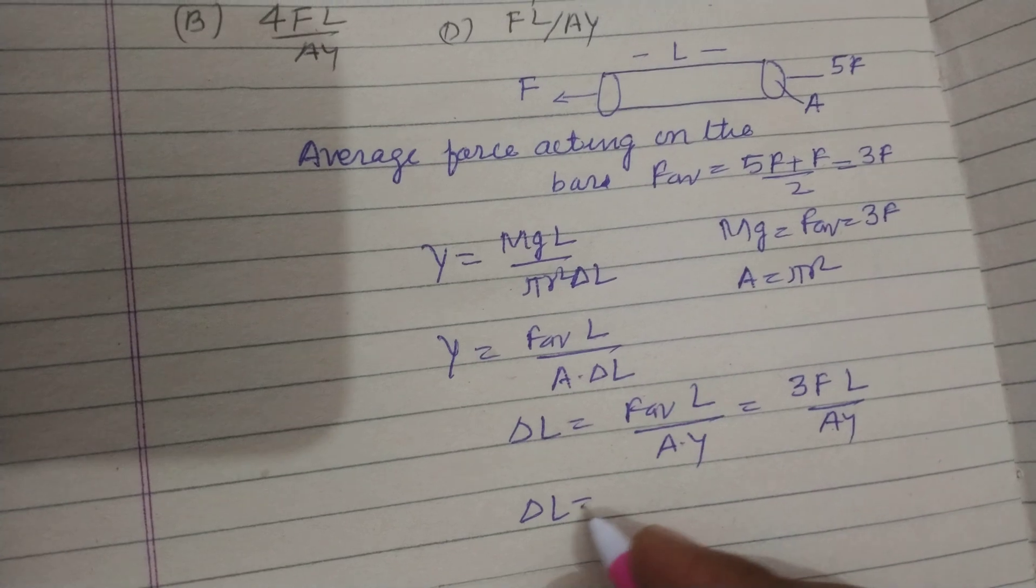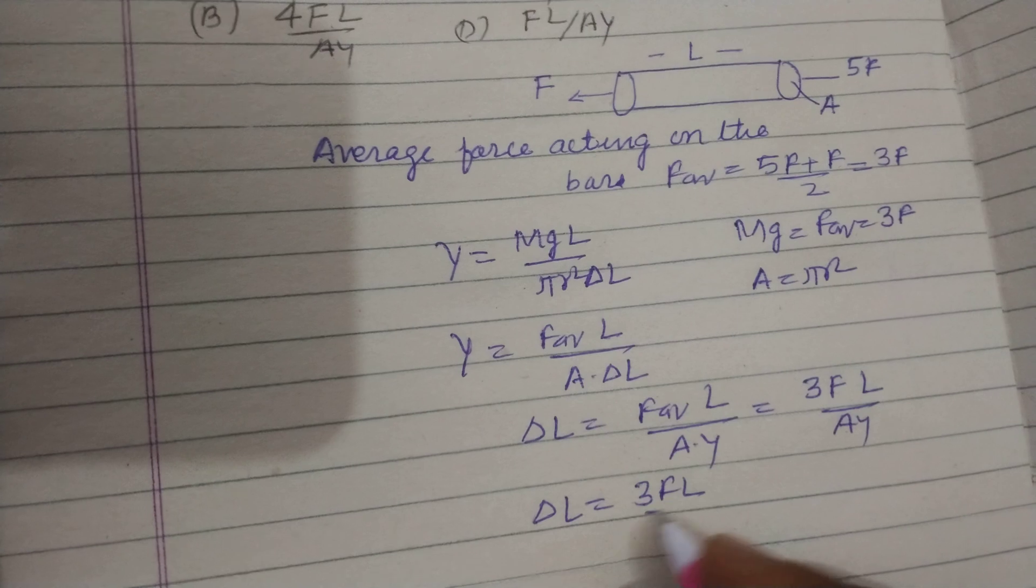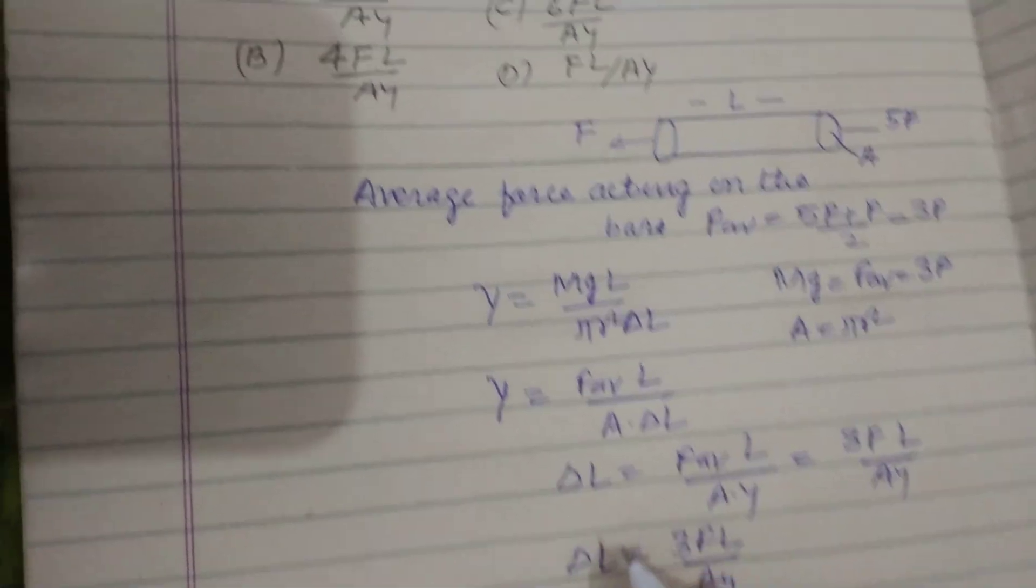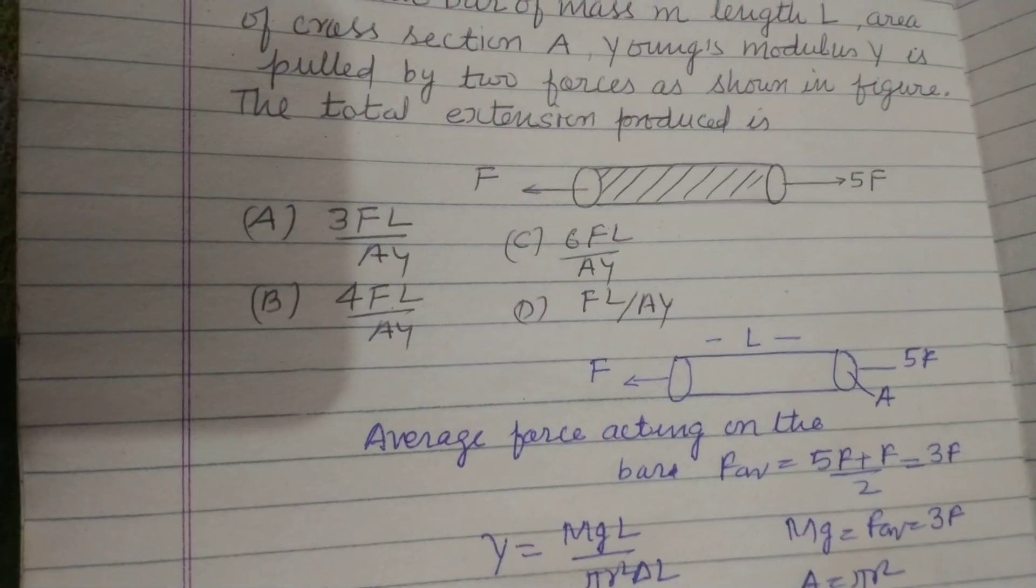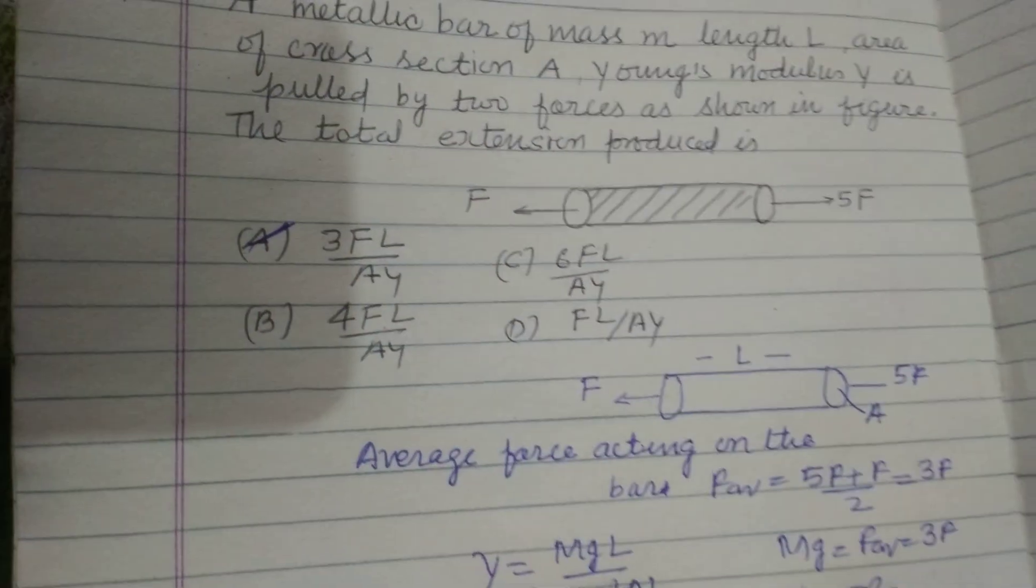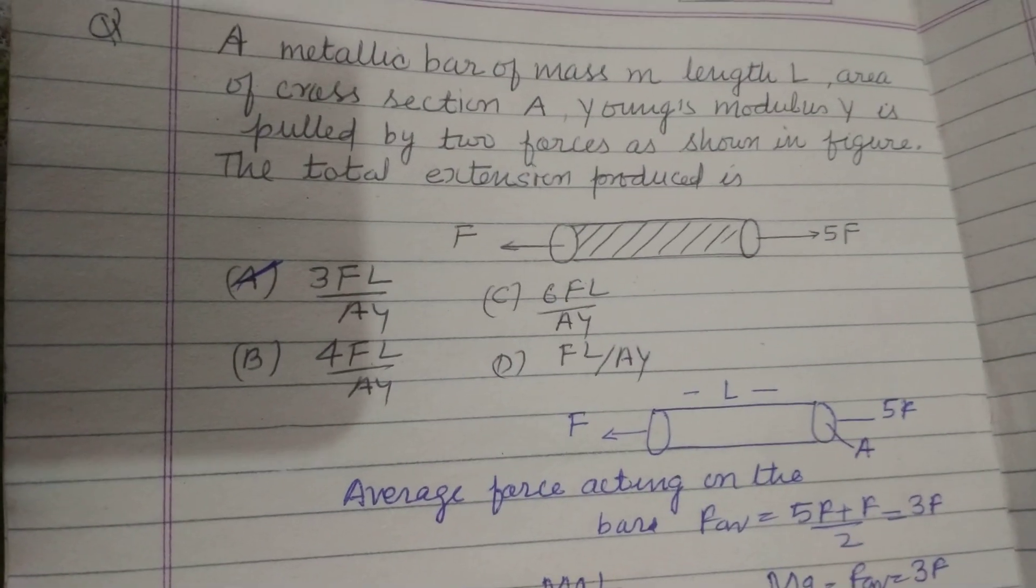So extension in the bar is 3FL upon AY, which is given in option A of this question. So answer of this question is A.